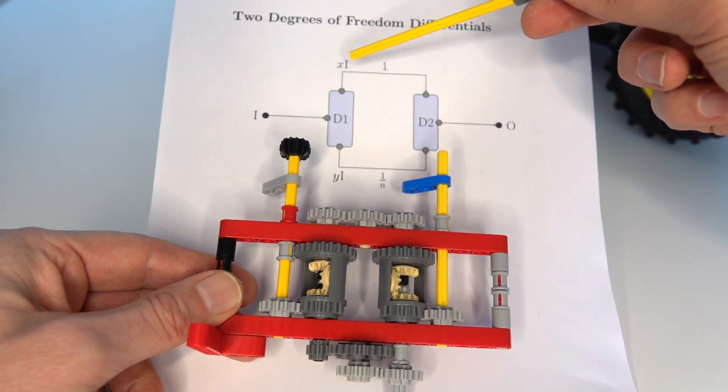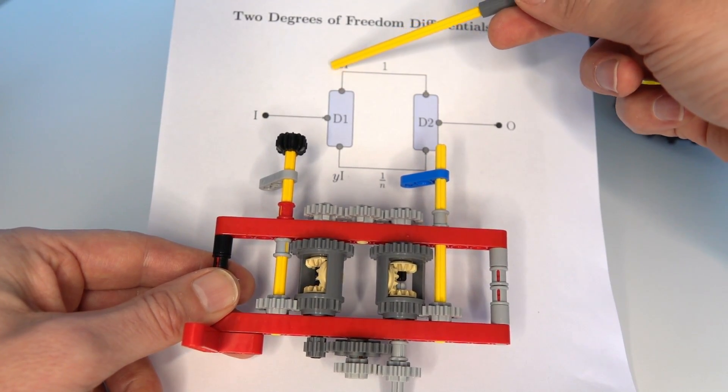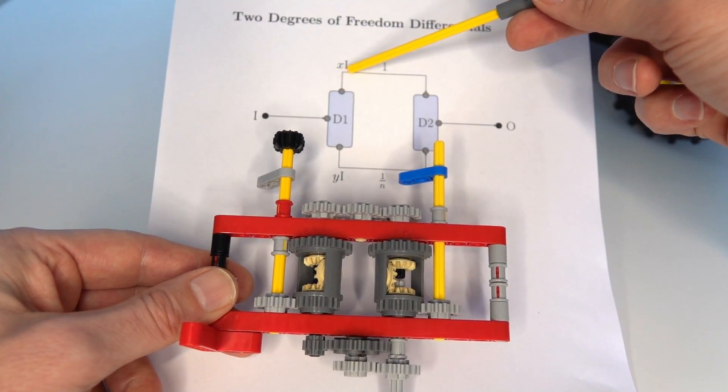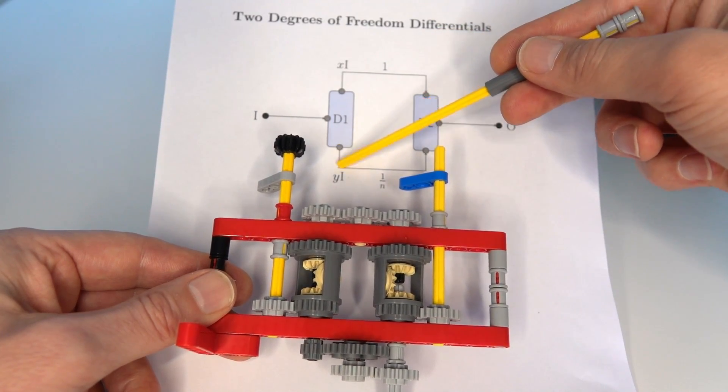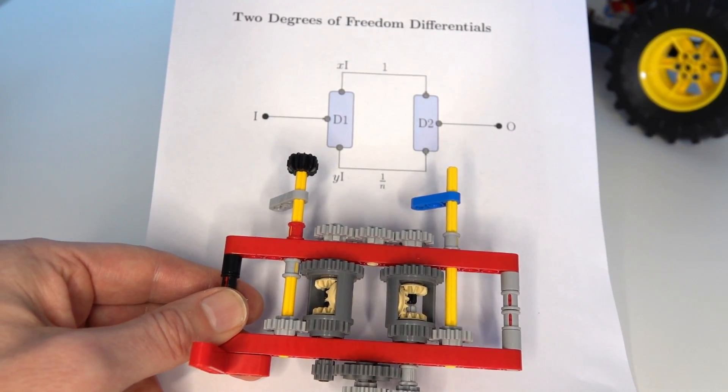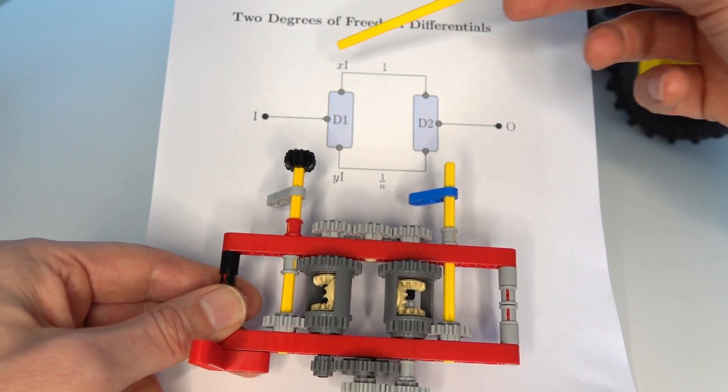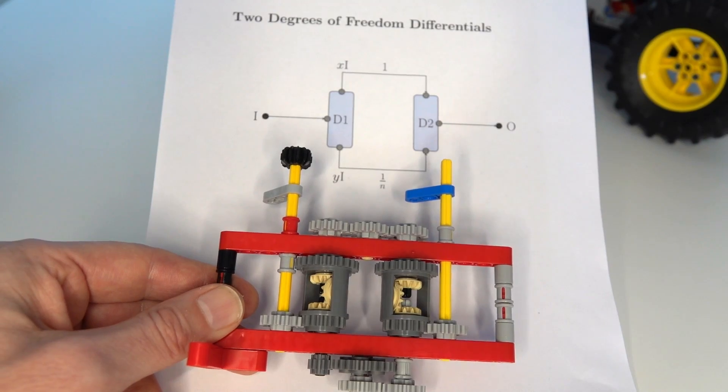In order to do the analysis what I've done is I've represented this top path gearing ratio to be x times i or the speed of the axle and the bottom one to be y times i and we'll use that to analyze this configuration and work out the equation relating the output to the input in terms of the variable x.